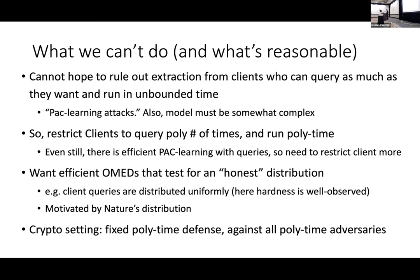First, we can't hope to rule out extraction from clients who can query the model as much as they want and run in unbounded time. This is referenced as a PAC learning attack: if the learner can obtain examples along some distribution it wants to learn on, it will eventually reduce training error in such a way that it generalizes well. So we could try to restrict clients to query a polynomial number of times or run in polynomial time, but this is still not enough because there's still efficient PAC learning with queries.